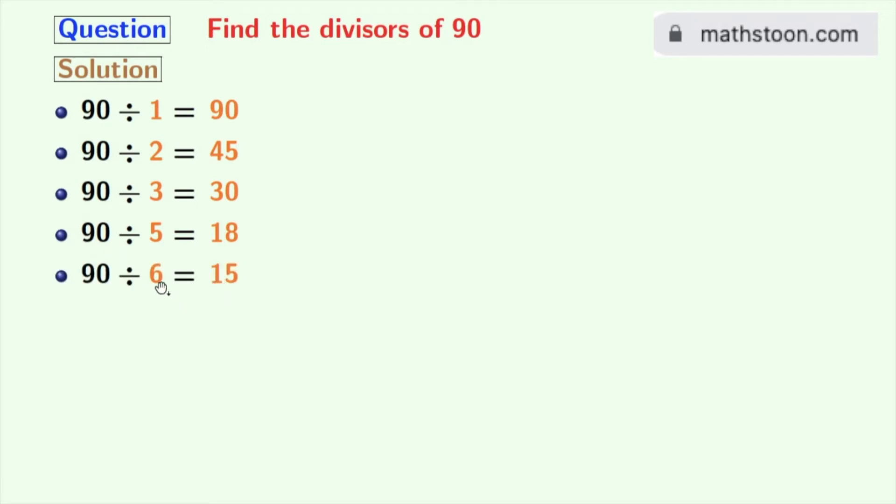Hence 6 and 15 are the divisors of 90. Next numbers 7 and 8 do not divide 90. So we will try for 9. 90 divided by 9 is 10. So 9 and 10 are the divisors of 90.